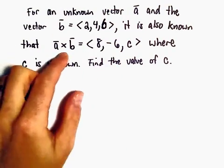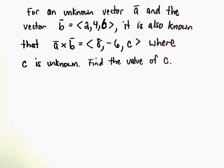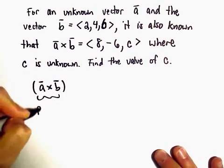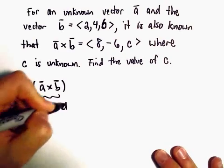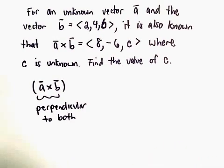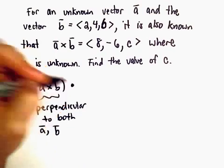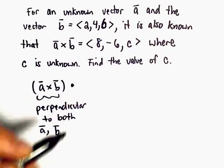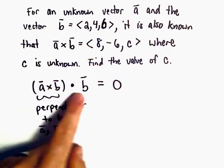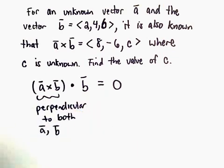We can't compute the cross product directly because we don't really have any information about vector A. But what we can do is make a couple observations. Recall when we take the cross product, the cross product is going to be a vector that's perpendicular to the original vectors — perpendicular to both vector A and vector B. Recall if we take the dot product of two vectors that are perpendicular, the dot product has to equal 0. This new cross product is going to be perpendicular to vector B, so their dot product is going to be 0. We're going to use that to create a little equation that we can solve.